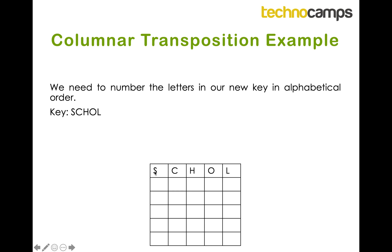The next step is to number our columns based on the key in alphabetical order. Going through alphabetically: C comes first so I label it column 1. Then H comes next so that's column 2. Then L is next so it's column 3. Then O is column 4 and S is column 5. So the order of my columns, reading left to right across S, C, H, O, L, is 5, 1, 2, 4, 3.